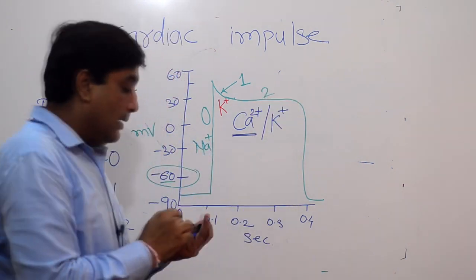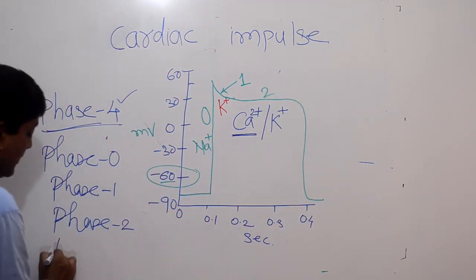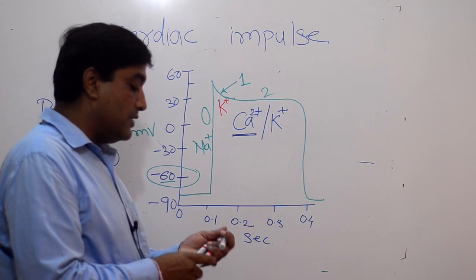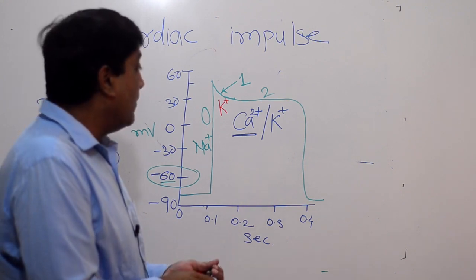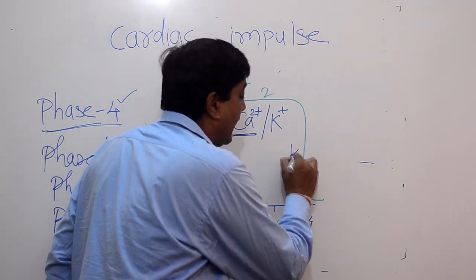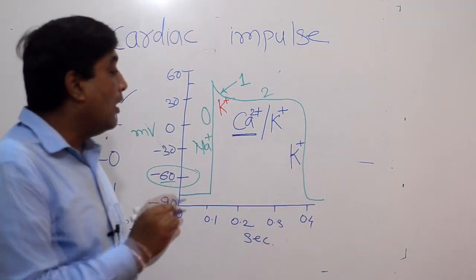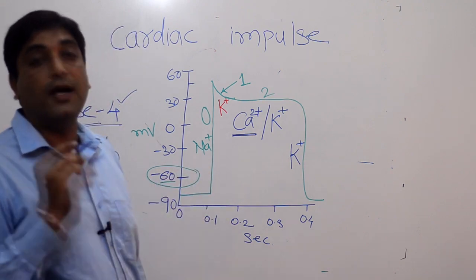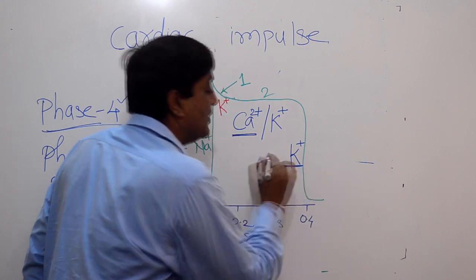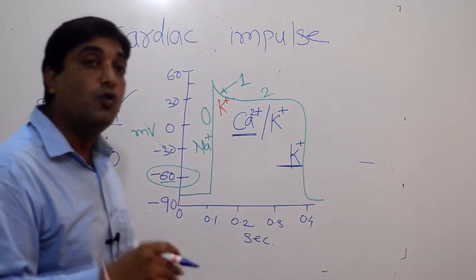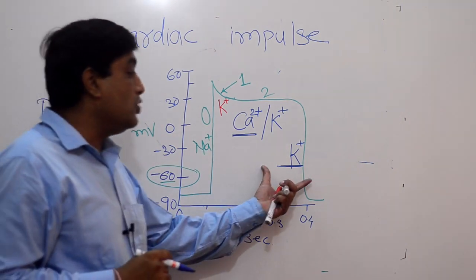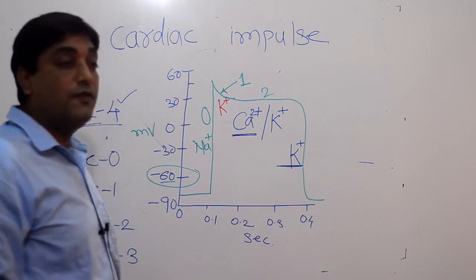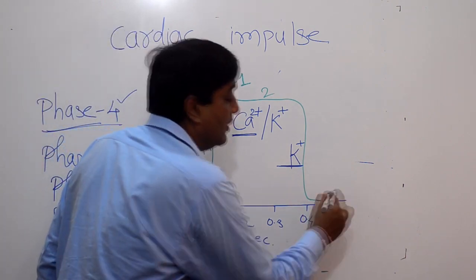Once this balance is achieved we consider this the plateau phase. When the plateau phase ends, we expect phase 3 — that is repolarization. This repolarization is regulated by activation of delayed outwardly rectifying potassium ion channels. These potassium ion channels get activated and potassium ions move outside the cell. This potential change will bring back the overall voltage of your cell back to normal — that is, to the resting potential.